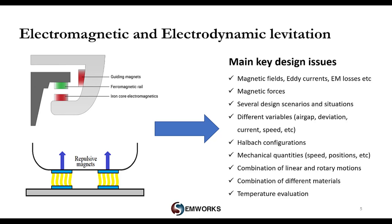Key design issues when studying such systems include investigating magnetic fields to avoid steel saturation, understanding induced eddy currents and electromagnetic losses, and computing generated forces at different situations. Many design scenarios must be covered. Mechanical quantities like speed and displacement need to be calculated, and in some situations a combination of linear and rotary motion is required, along with heat generation estimation. Simulation is the best solution to tackle these problems.